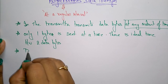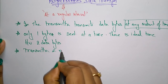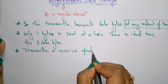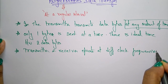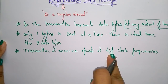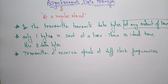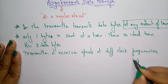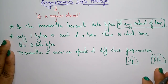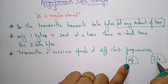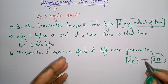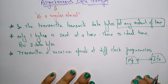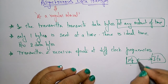The transmitter and receiver operate at different clock frequencies. Each system is independent — the transmitter and receiver can operate at different clock frequencies. There is no condition that both systems must operate at the same clock frequency. So data can be transmitted asynchronously from processor to I/O and from I/O to processor.